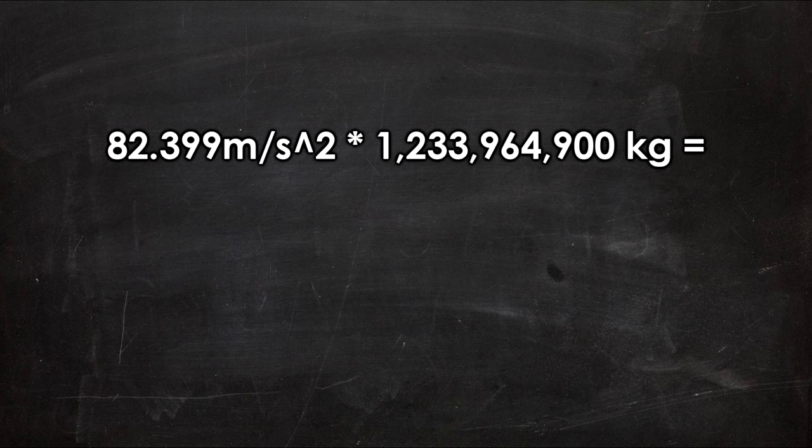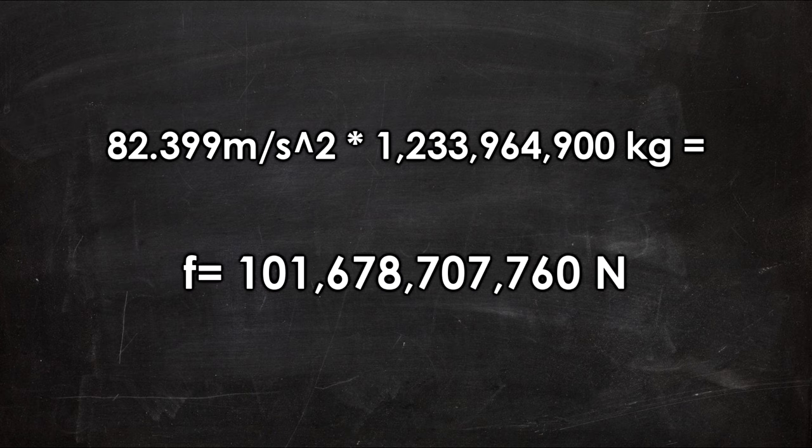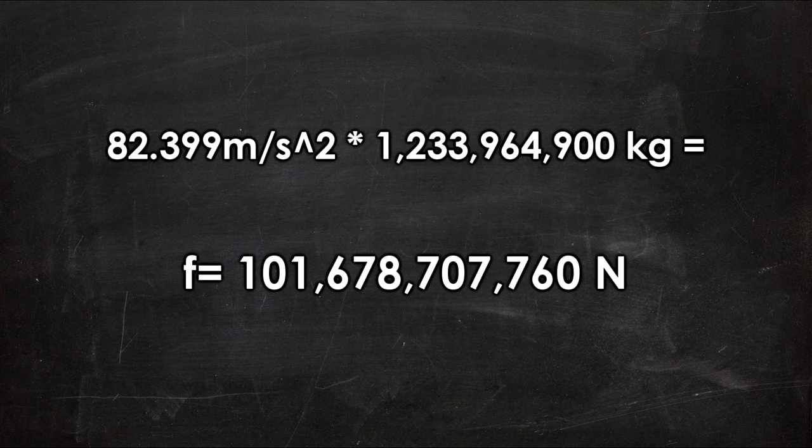With F equals MA, we can calculate that Steve is outputting 101,678,707,760 newtons of force when he is jumping. Now that we know the force that Steve is outputting at his heaviest, let's find how high he would go when he's at his lightest.